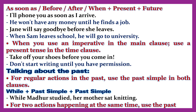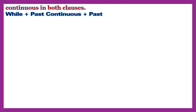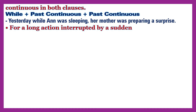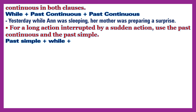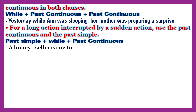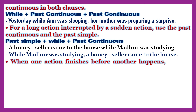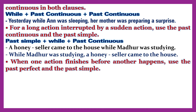For two actions happening at the same time, use the past continuous in both clauses. Structure: while + past continuous + past continuous. Example: Yesterday while Anne was sleeping, her mother was preparing a surprise. For a long action interrupted by a sudden action, use the past continuous and the past simple. Example: A honey seller came to the house while Madhya was studying. While Madhya was studying, a honey seller came to the house.